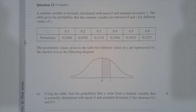Question 22. A random variable is normally distributed with mean 0 and standard deviation 1. The table gives the probability that this random variable lies between 0 and z for different values of z. The probability values given in the table for different values of z are represented by the shaded area in the following diagram.